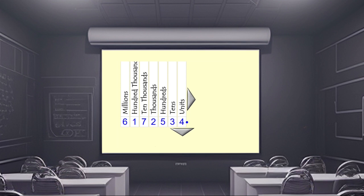Now you need to learn these column headings. When you get to level one of the online exercise, the questions will be like this: 'Which number is in the hundreds column?' — the answer would be five. 'Which number is in the millions column?' — the answer is six. Or 'Which digit represents thousands?' — in this case it would be two. That's how you answer the questions in level one. Have a go — the address is below.